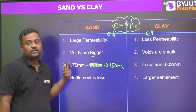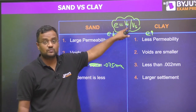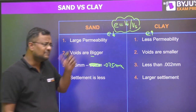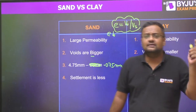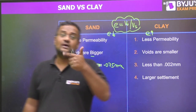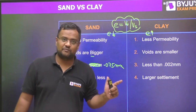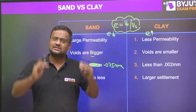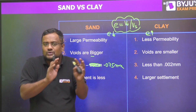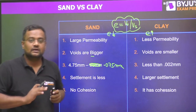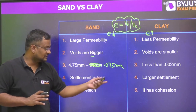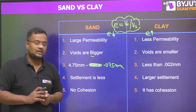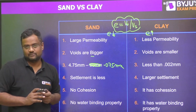As the void ratio is less in sand but total volume of voids is more in clay, clay is more settleable. However, settlement itself is never the main problem in soil — the problem is differential settlement, like the Leaning Tower of Pisa, where one side settles more than the other. There is no cohesion in sand, but there is cohesion in clay because clay has charge separation and water-binding properties.